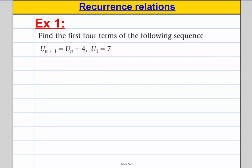So let's have a go at a few examples. We are asked to find the first four terms of the following sequence. We are told that un plus 1, the next term is the one before it, the un, the one just before it, add 4. And we're told the first term is 7.